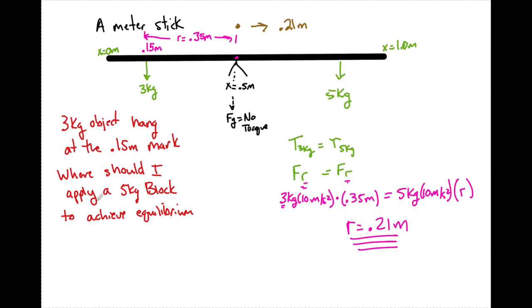So where must I place it? I need to start at the center point 0.5 meters and add 0.21 meters to that. And the five kilogram block is then going to be placed at 0.71 meters. So that is going to be your answer.